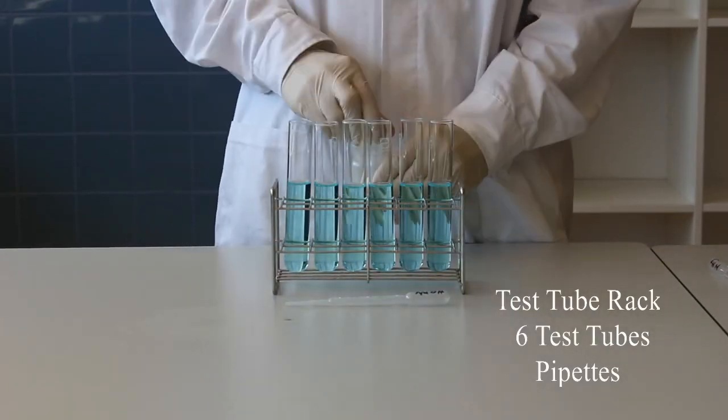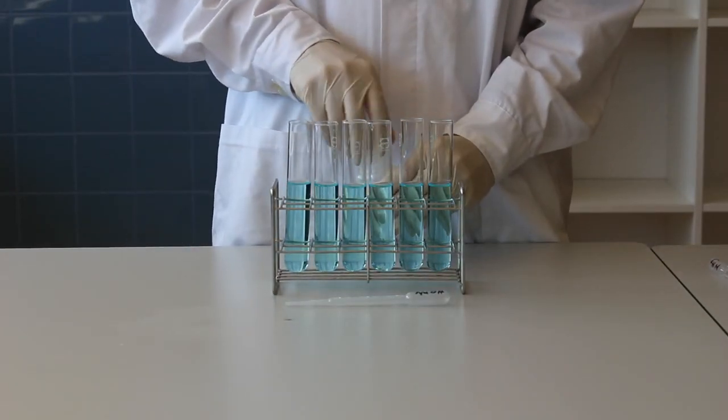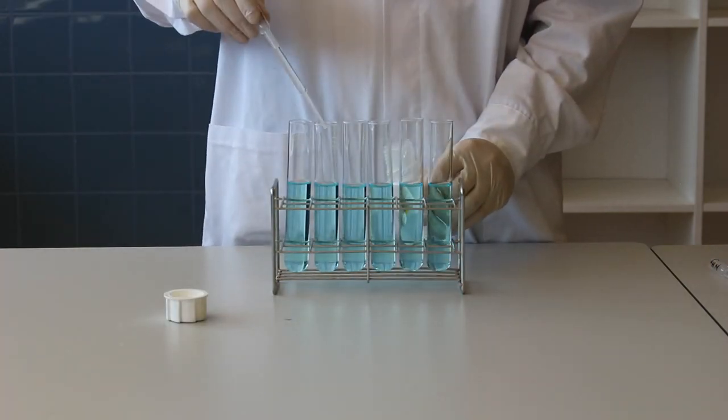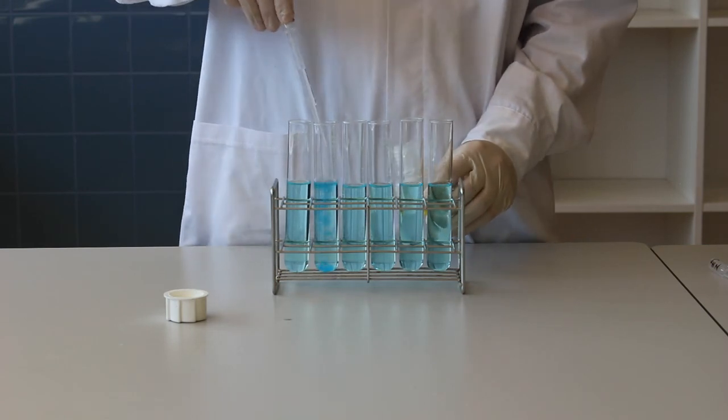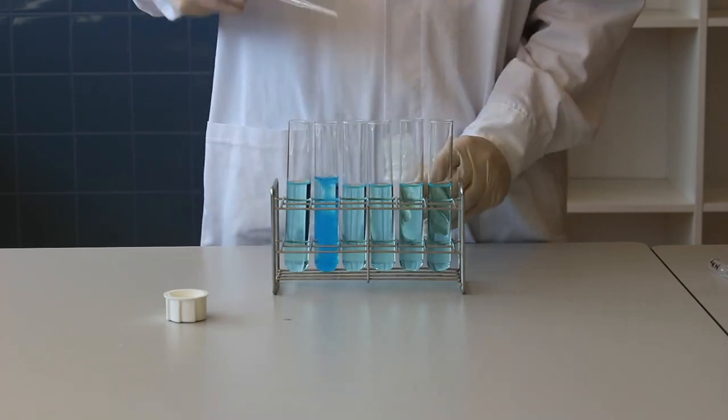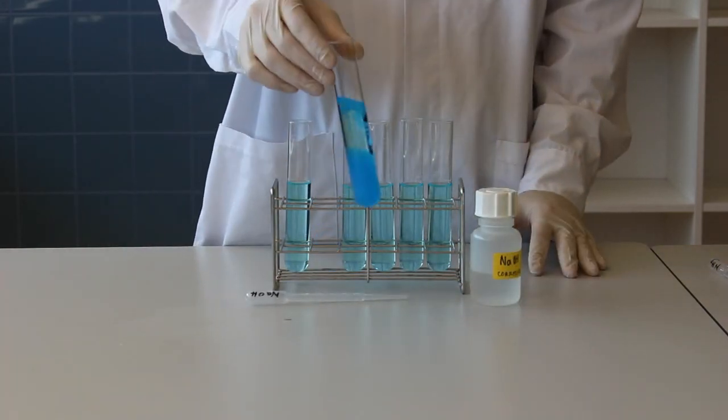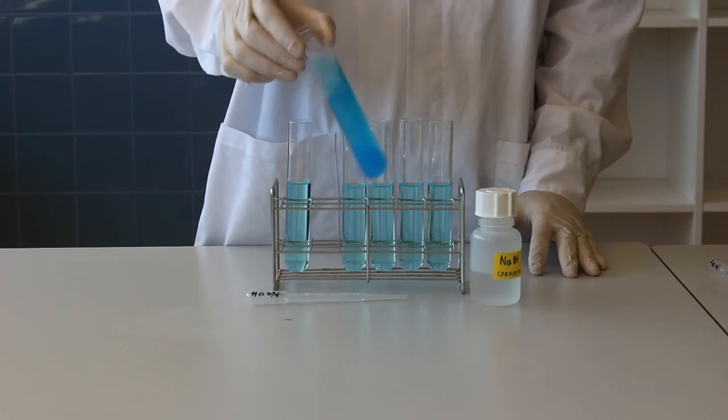And now we add sodium hydroxide. The hydroxide ions are going to remove the hydrogen ions from the water ligands. And once hydrogen ions have been removed from two of the water molecules, you are left with a neutral complex. This will form a precipitate. The precipitate formed by the addition of sodium hydroxide will be light blue.